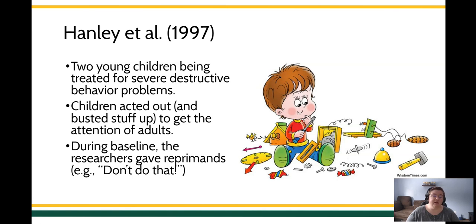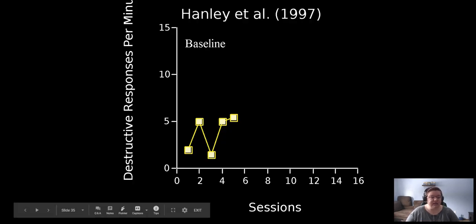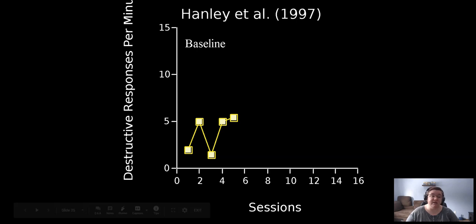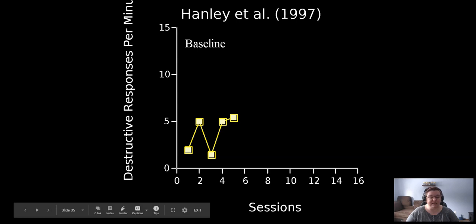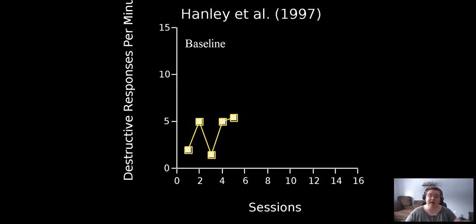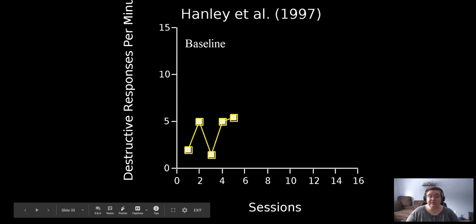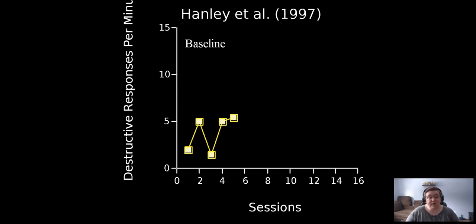In the baseline condition, researchers would give reprimands whenever a target destruction behavior occurred — things like 'don't do that.' The target behavior was destruction of simple paper, stuff you could destroy without putting someone out of a lot of resources. On screen I'm showing you some data. The y-axis is the number of destructive behaviors per minute, and the x-axis shows sessions. You can see in the baseline condition, when researchers were saying 'don't do that,' there was a fair amount of destructive behavior — about five per minute. That's roughly 30 things destroyed in a five-minute lecture — a lot of destructive behavior.